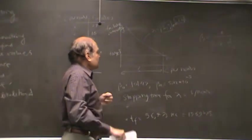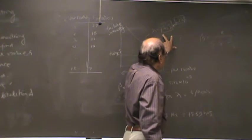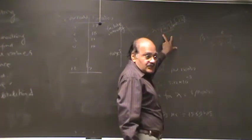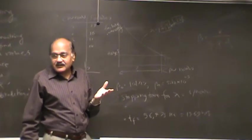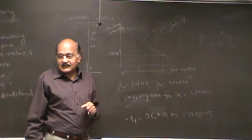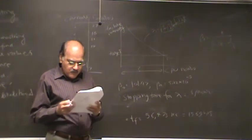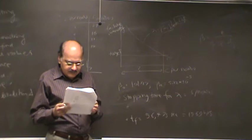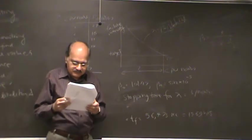So if you take the log of both sides, you will get log of beta zero minus beta one times t, which is a linear expression with respect to t, and you can apply a linear regression. But that is another way of doing it.